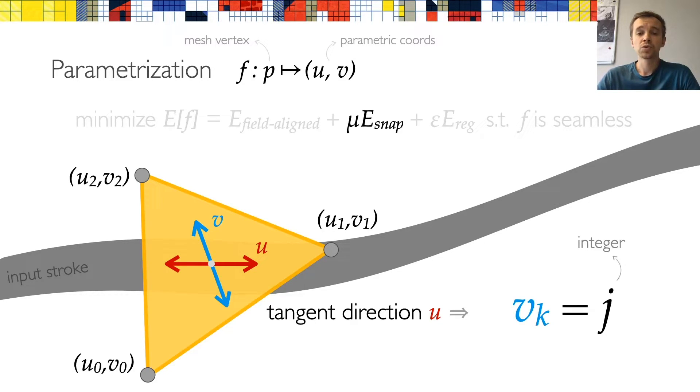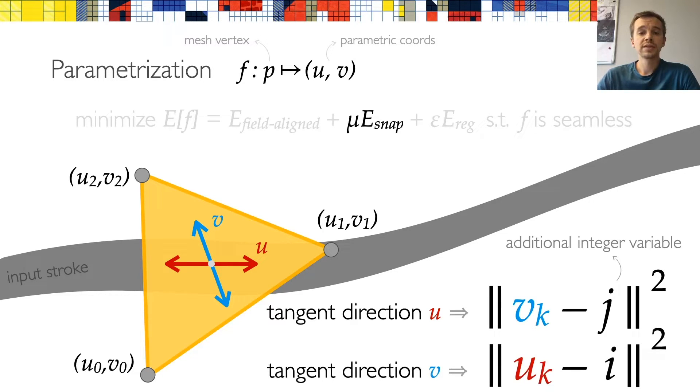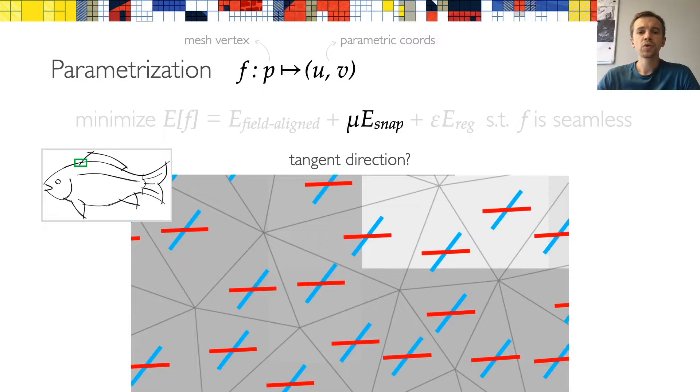Of course, enforcing this as a hard constraint would create degenerate parametric triangles. So instead, we add this term as a soft penalty by introducing additional integer variables, which represent the iso lines. Of course, this works in very much the same way if the tangent direction is v, in which case we add the constraint for u coordinates. In practice, we don't introduce one integer per triangle, since that would significantly increase the computational complexity. Instead, we use a strategy that allows us to eliminate many of the additional integers by snapping adjacent triangles with the same tangent direction to the same isoline.